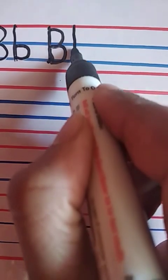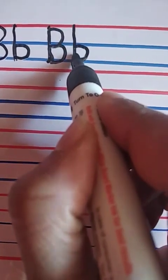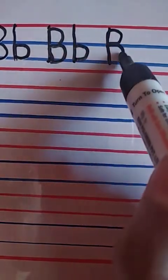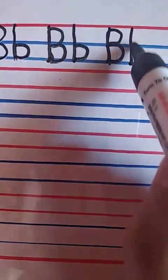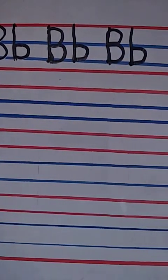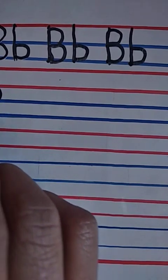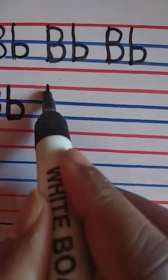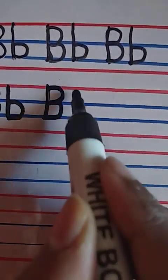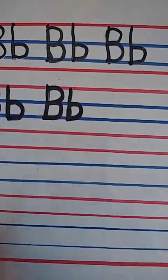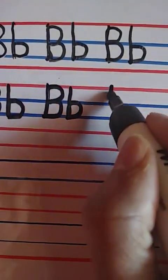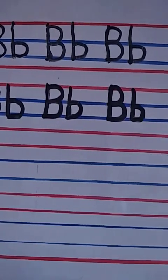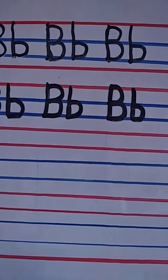That is B, small B. Again: standing line, go up, a bump, a bump. Again go up, a bump, and then a bump. Again: standing line, go up, a bump, a bump — B, small B. Standing line, go partially up, a bump from there. B says B, B says B. Children, B again — I will write B.